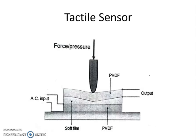Tactile sensors are used to sense the contact of fingertips of a robot with an object. They are also used in the manufacturing of touch display screens of visual display units.